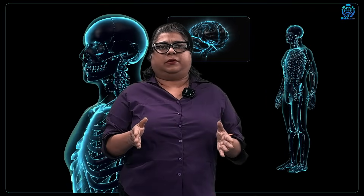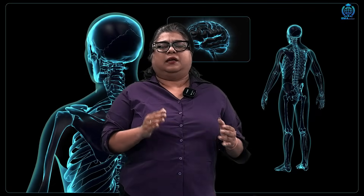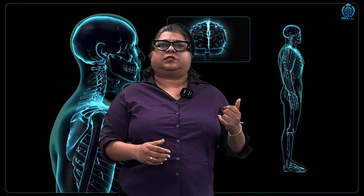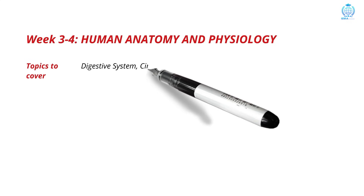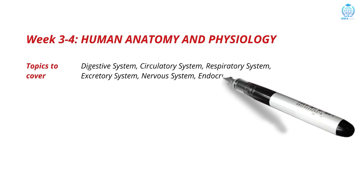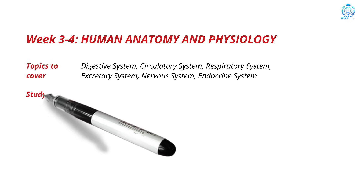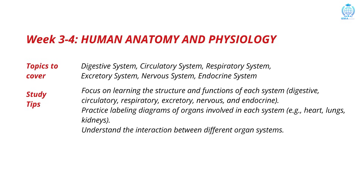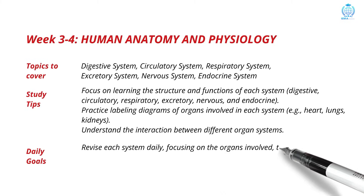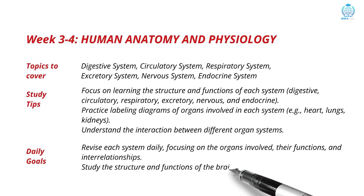Now that your plants are healthy, let us understand the most fascinating machine of all — the human body. For weeks 3 and 4, study human anatomy and physiology. This section covers digestive, circulatory, respiratory, excretory, nervous and endocrine systems. Study how these systems work together. Learn the structure and function of every major organ — heart, lungs, brain, kidneys. Practice diagrams daily and memorize their labeling. Biology is not about remembering long paragraphs; it is about seeing how every part connects, just like instruments in an orchestra.